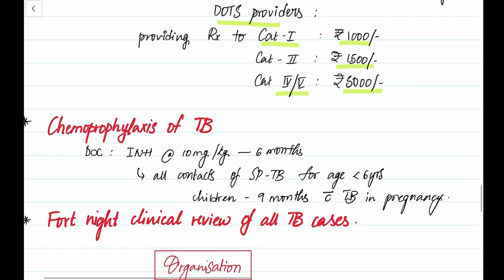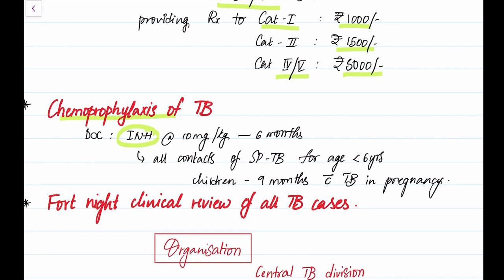Next strategy is chemoprophylaxis of TB where the drug of choice is isoniazid. Here's the dosage, and this chemoprophylaxis is given to all contacts of sputum positive TB for age groups less than six years and in children from nine months with TB in pregnancy.